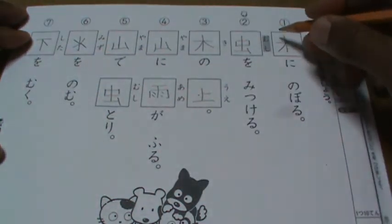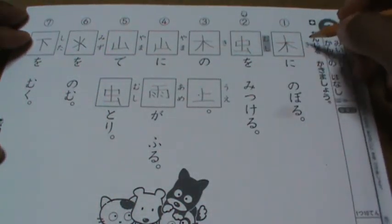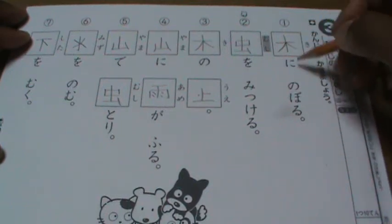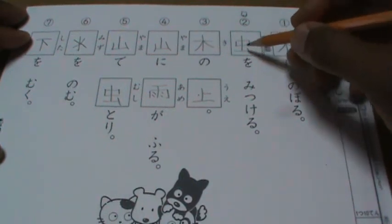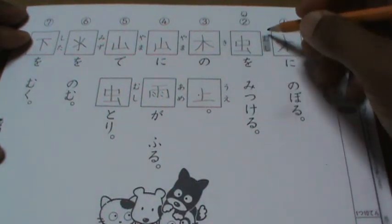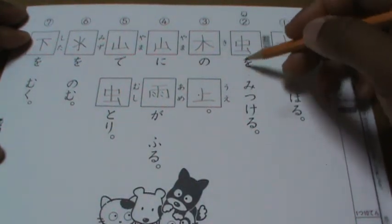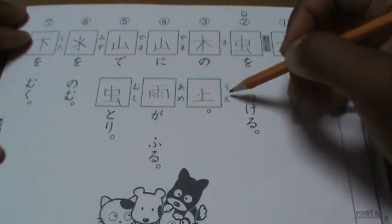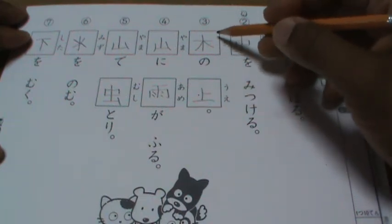So ki, the tree. Climb the tree. Mushi o mitsukeru, looking at the bug or insect. Ki no ue, it's on the tree.